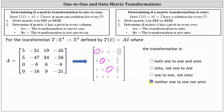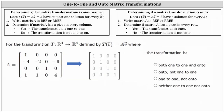Let's take a look at a second example — same question, different matrix A. So again, we want to write the matrix in either row echelon form or reduced row echelon form and identify the pivots. I've already written matrix A in reduced row echelon form. We can see we have a pivot in row one column one, row two column two, row three column three, and row four column four.